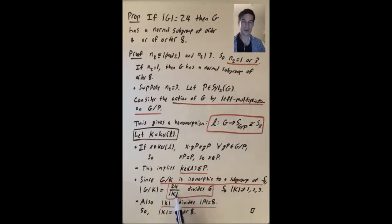So the order of k can't be too small. It can't be 1, 2, or 3, because then you get some number that doesn't divide 6. So what do we have? We have that the size of k is a number that divides 8, and it's not 1, 2, or 3.